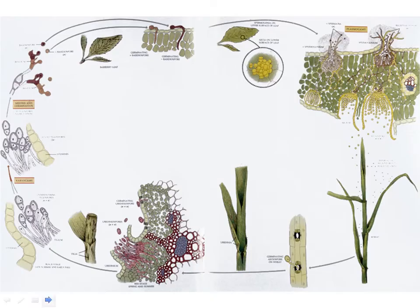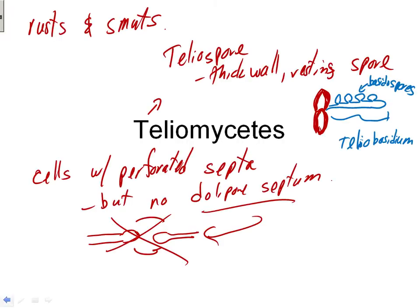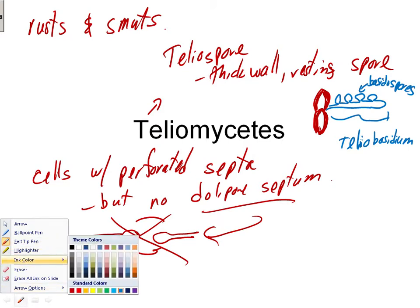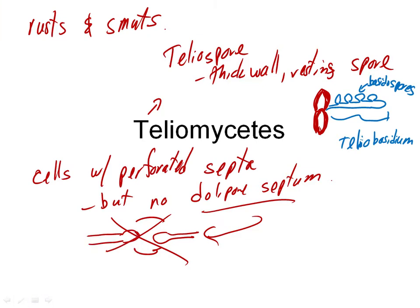Is the whole red and blue structure meant to be the telio-basidium? Well, it gets a little hard to define exactly. The telio-basidium is drawn in blue, but it comes out of the teliospore, so some textbooks say the teliospore is part of the telio-basidium. You're never going to be asked to differentiate that kind of detail.